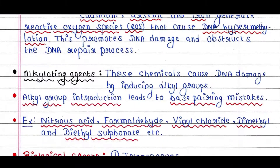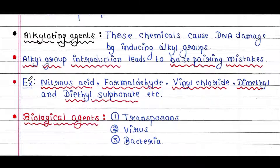Alkylating agents cause DNA damage by inducing alkyl groups. Alkyl group introduction leads to base pair mistakes. Examples of alkylating agents are nitrous acid, formaldehyde, vinyl chloride, dimethyl and diethyl sulfonate, etc.